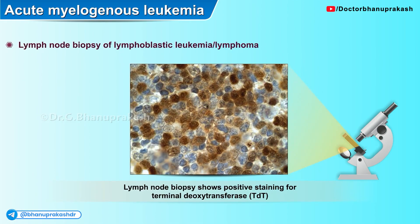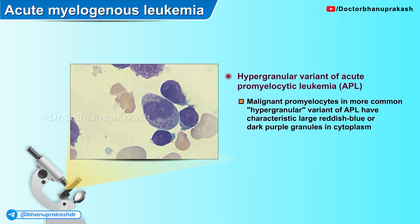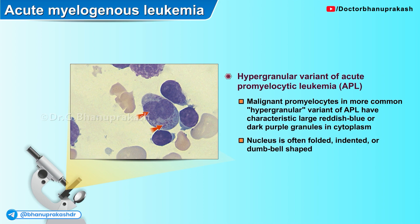Here is a lymph nodal biopsy showing positive staining for terminal deoxytransferase, a common enzyme seen in more immature forms of cells as well as in lymphoblasts. The malignant promyelocytes in the more common hypergranular variant of acute promyelocytic leukemia have characteristic large reddish-blue or sometimes dark purple granules in their cytoplasm, and the nucleus is often folded, indented, or sometimes dumbbell shaped.